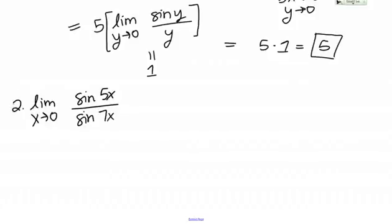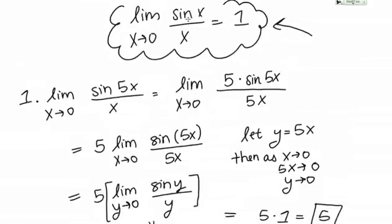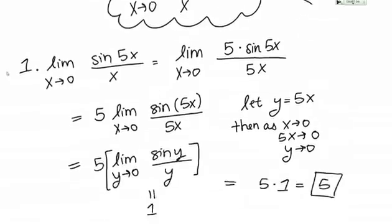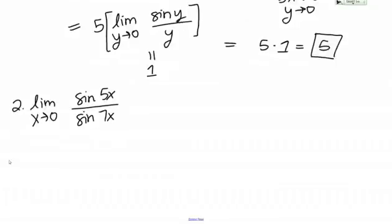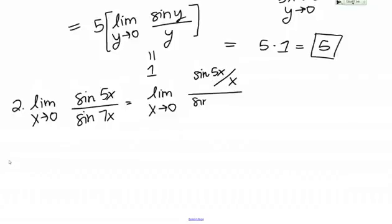This problem looks pretty different from the special limit we know because we have a sine on top and a sine on the bottom with different arguments. Like in number 1, I can use algebraic manipulation to get this into a usable form. I'm going to start by dividing both the top and the bottom by X — that is, sine of 5X over X in the numerator and sine of 7X over X in the denominator. I haven't changed the limit by doing this.